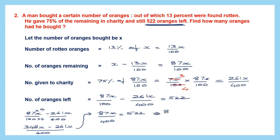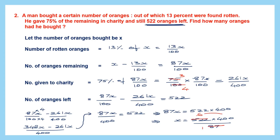To find X: X equals 522 into 400 divided by 87. Cancelling 87 and 522 — since 87 times 6 equals 522 — we get 6 into 400, which is 2,400. So the number of oranges bought is 2,400. This is our final answer.